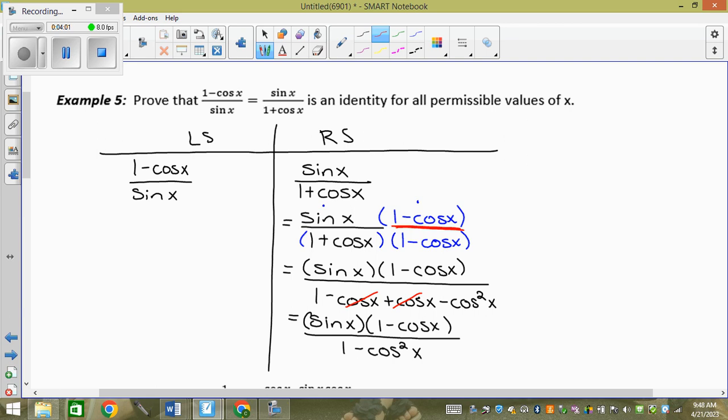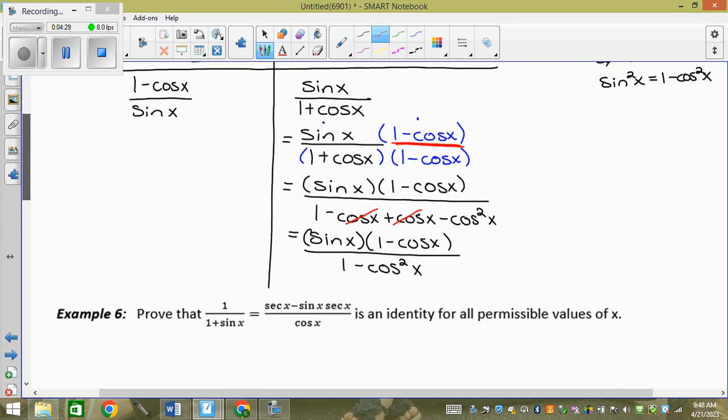Is one minus cos squared x anywhere on my formula sheet? Yeah, equals sin squared x. So if I look at my formula sheet, I have sin squared x plus cos squared x equals one. If I subtract the cos squared x over, I get sin squared x. I'm trying to cancel off the sine, right?